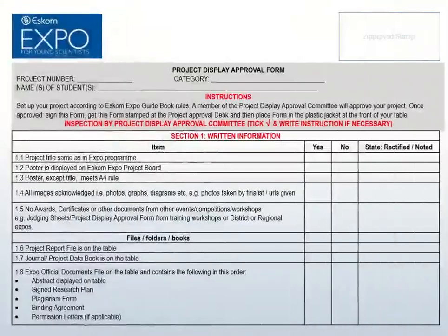This is the project display approval form that will be used to inspect your display at the Expo Science Fair. Download this form from the Expo website to check your project. Do not complete this form and take it to the science fair. This form has three sections. Section 1 tells you what written work you need to display at the science fair. If any of these documents are missing, it will negatively affect the judging of your project.